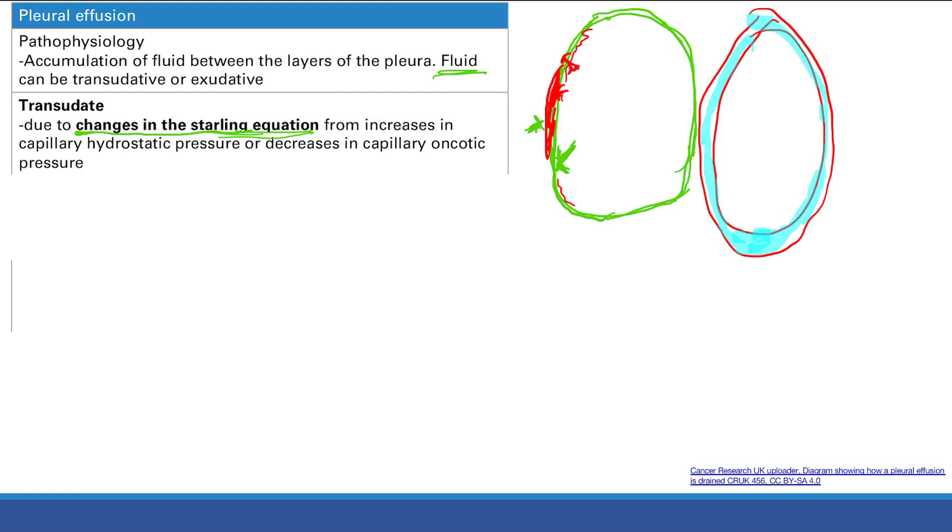So, how do you get increased capillary hydrostatic pressure? This is simple. That's basically from too much fluid building up in the lungs, so something like left heart failure causes that.